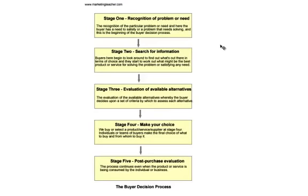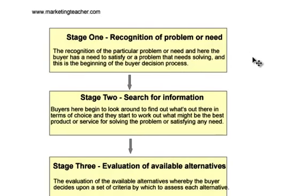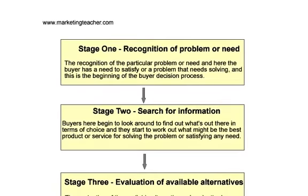Let's look at each stage and offer a quick explanation of what it's all about, and then let's apply it to an organization to help us work out what it's all about. Stage one is the recognition of a particular problem or need. Here the buyer has a need to satisfy or a problem that needs solving, and this is the beginning of the buyer decision process.